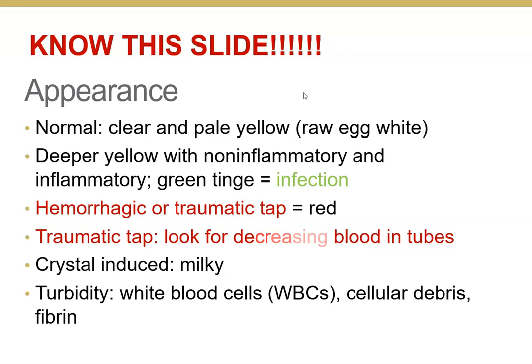The normal appearance of synovial fluid is a pale yellow color — like egg white. If the color is a deeper yellow or has a green tinge, that may indicate inflammatory or non-inflammatory arthritis, or a possible infection. If the fluid is cloudy or hazy, there may be white cells present, cells picked up from the synovial membrane, or some fibrin.